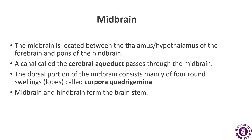The midbrain is located between the thalamus and hypothalamus of the forebrain and the pons of the hindbrain — it lies in the middle of these structures. There is a canal called the cerebral aqueduct which passes through the midbrain. The dorsal portion of the midbrain consists mainly of four round swellings called the corpora quadrigemina. The hindbrain and midbrain together form the brainstem.